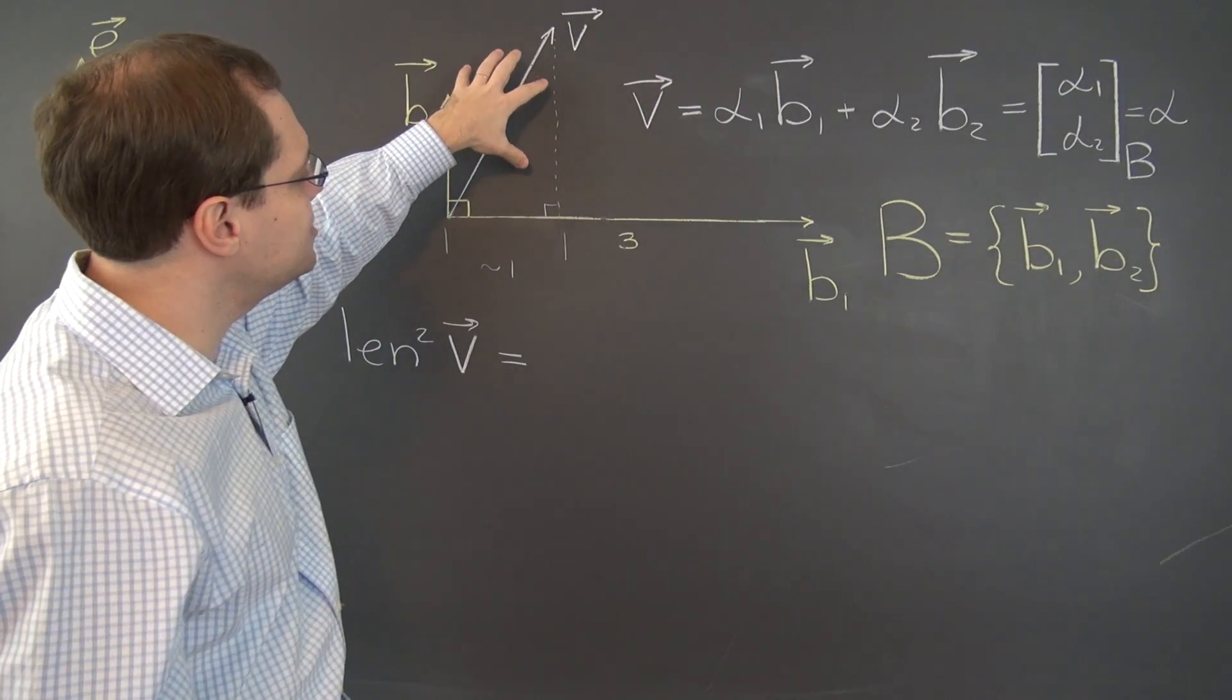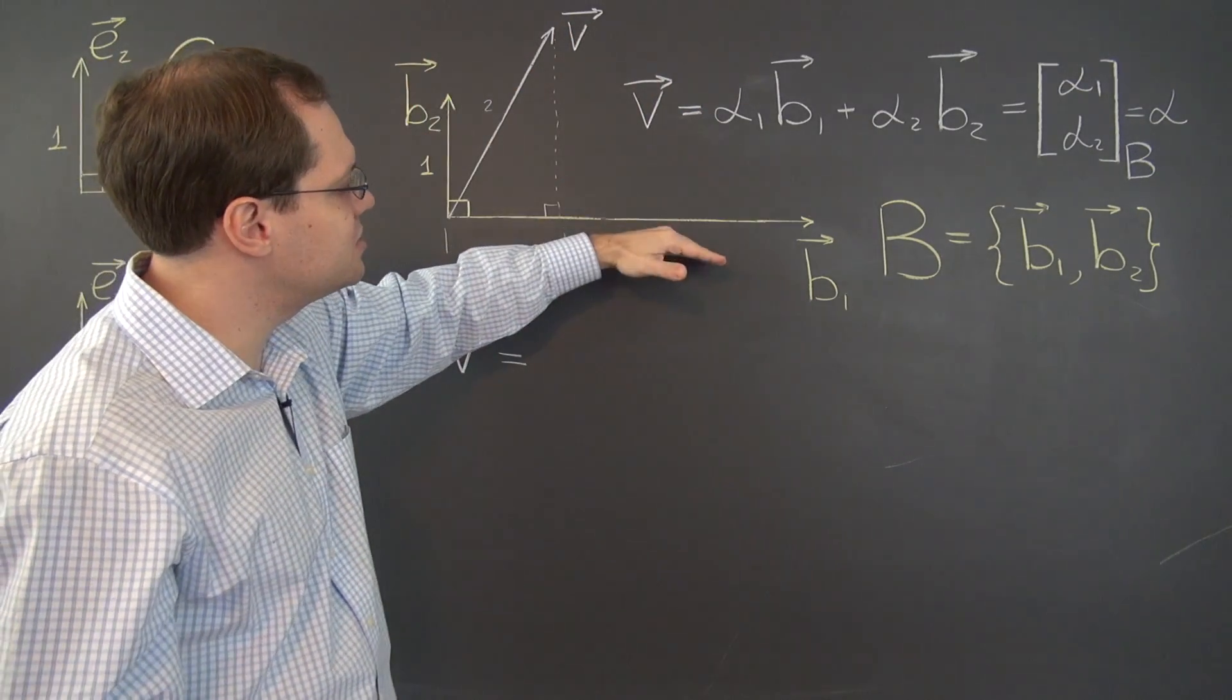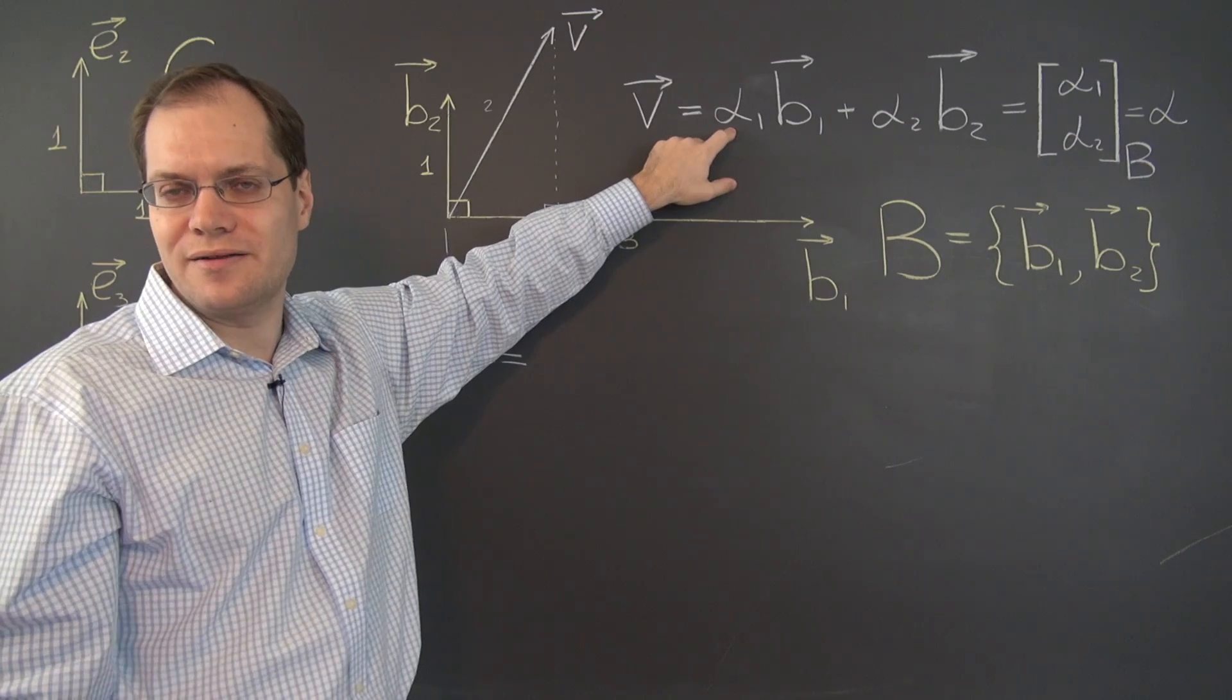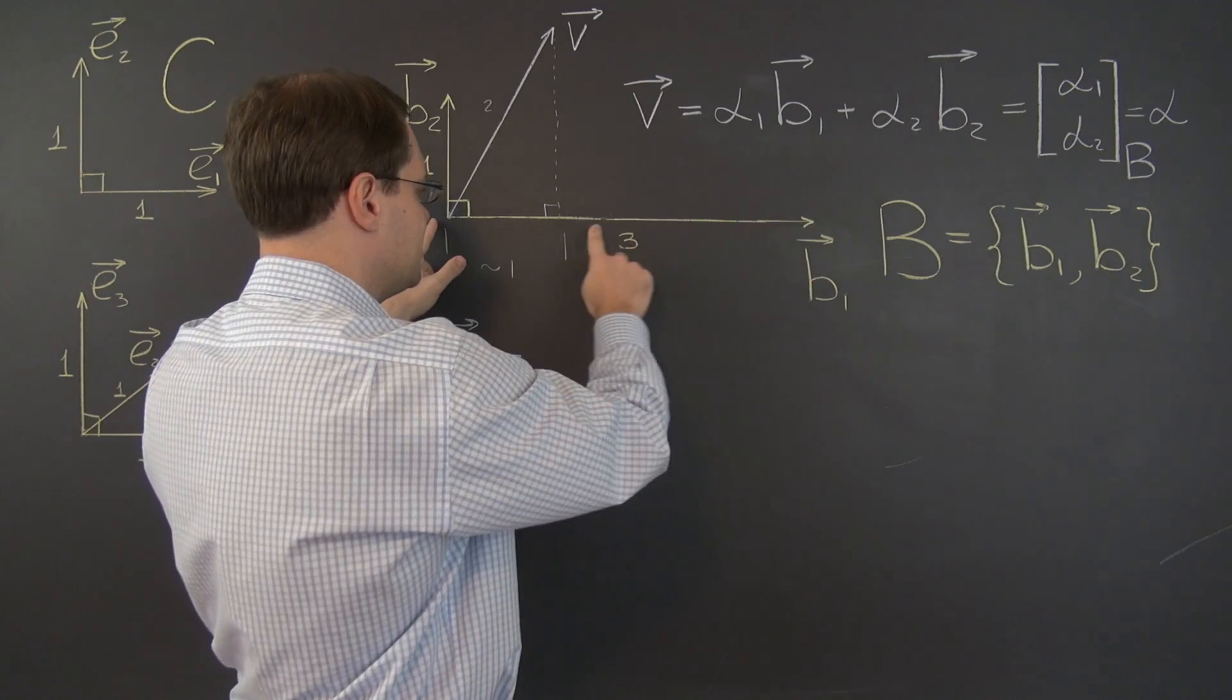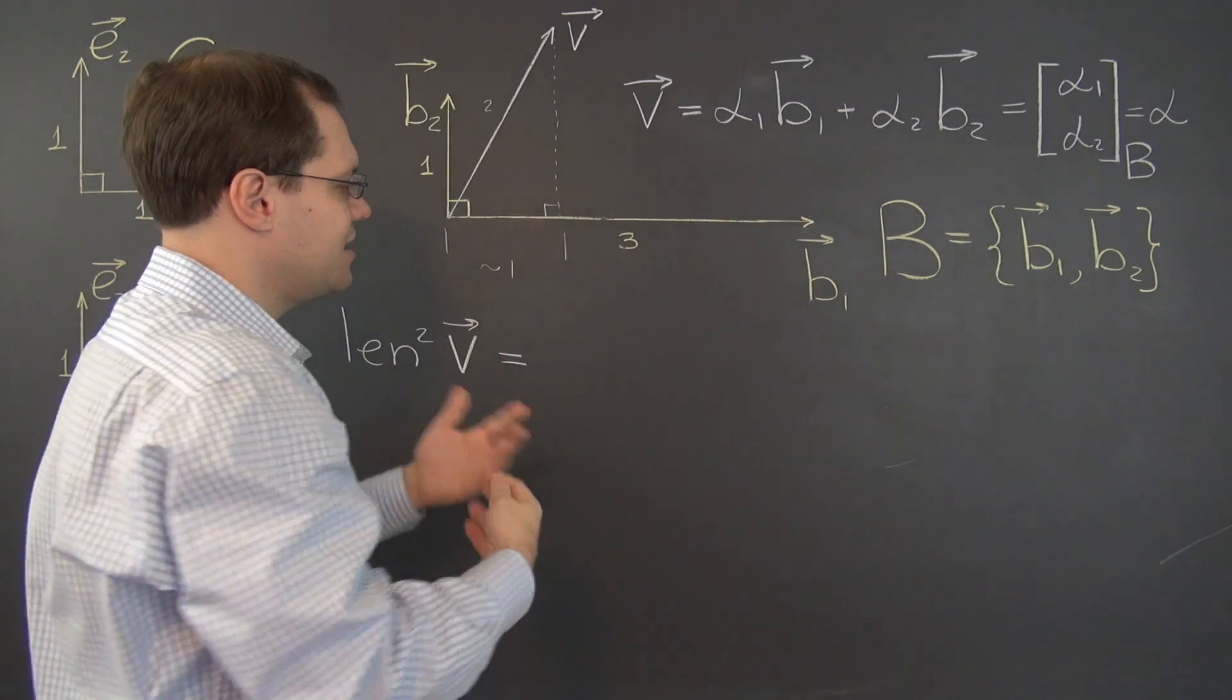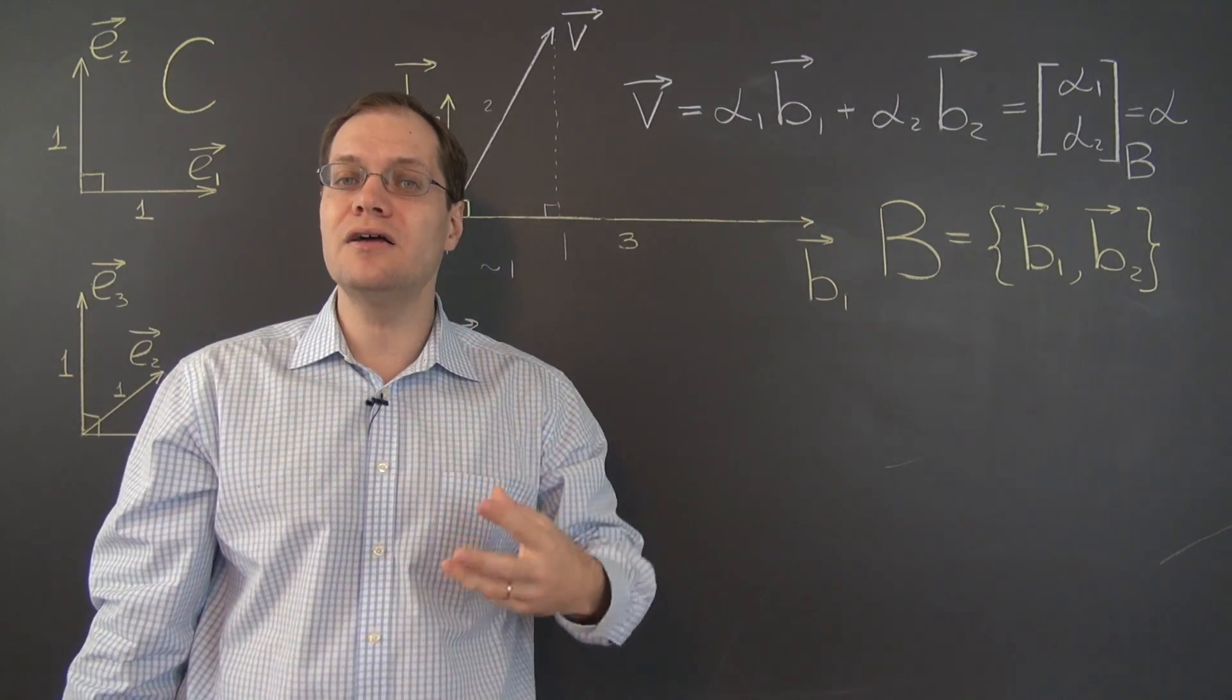So alpha 1, we're now decomposing this vector v with respect to this basis. So alpha 1 is not 1. It's much smaller than 1 because we don't have to take an entire vector b1 to get this. We have to take about a third, looks like a little bit under one third.